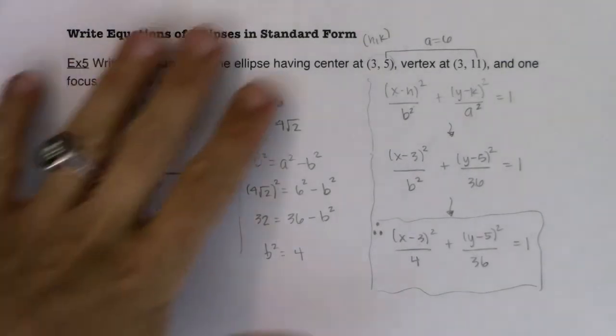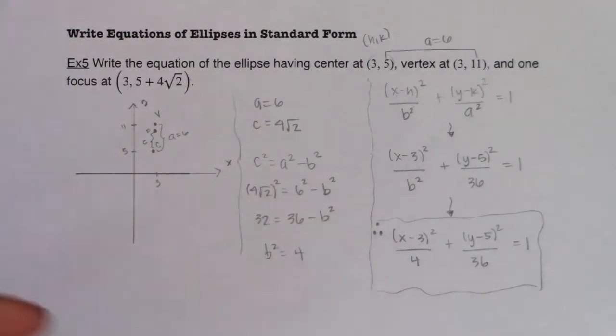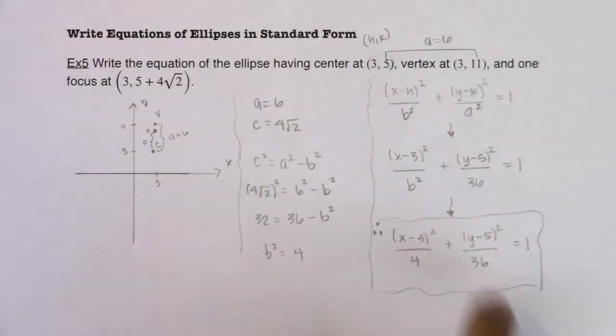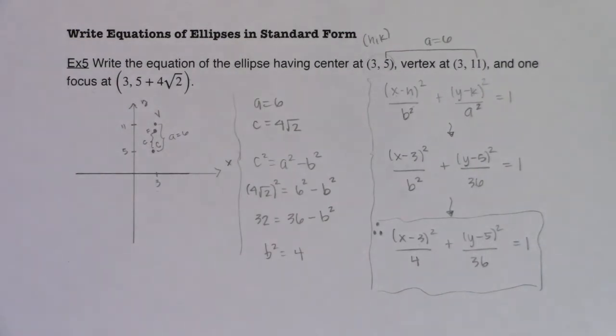So with that, we've done our first of what I refer to as the backwards problems. So the backwards problems are where I give you some traits and ask you to get the equation of ellipse. We're going to try that again in example 6. So I will see you in just a little bit. Thanks so much. Bye.